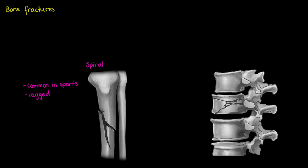It's named a spiral fracture due to the fact that it's often the result of a twisting force applied to the bone, such as a sports person planting their foot down and swiftly changing direction. It's often also a ragged or splintered break, as can be seen here, so usually due to twisting force.